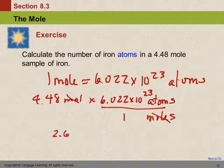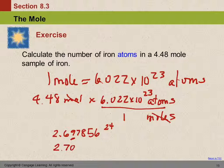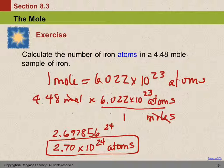My calculator is showing me the result in calculator language — I have to translate that into human math language. I'm going to round to three significant figures. The next digit is 5 or greater so I round up, which runs the 9 up to 10, which runs the 6 up to a 7. The answer is 2.70 times 10 to the 24th atoms of iron.